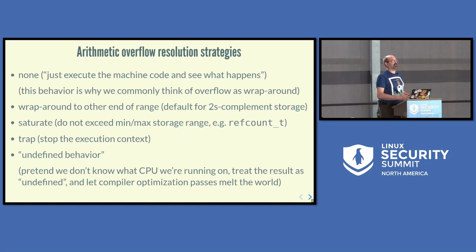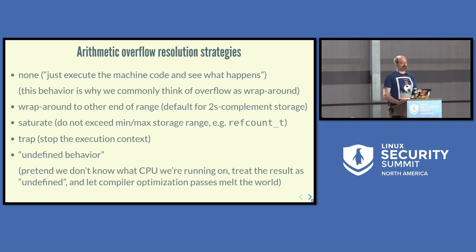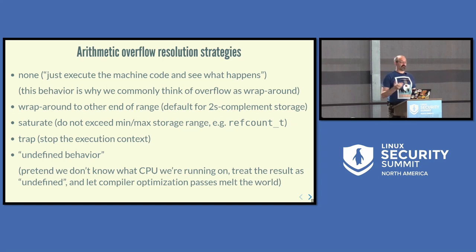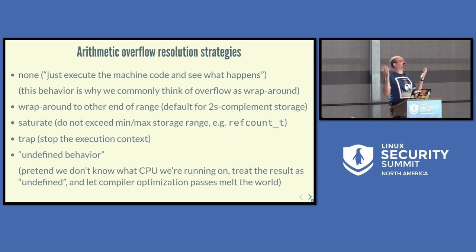For a compiled language like C, there are several overflow resolution strategies. One option is to do nothing — just let the machine code wrap around, which is the most common mental model. Another is to explicitly define wraparound. A third is to saturate at overflow: simply not go beyond the maximum or below the minimum value. We have an implementation of this in the kernel with refcount_t, which saturates at an invalid value. Then there's trapping: once you reach an overflow, you say we can't handle it, kill this thread of execution. And finally there's undefined behavior.